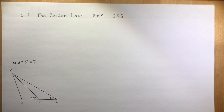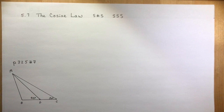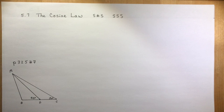5.7, the cosine law. Do you remember the cosine law from grade 10? That was the last one you learned because when you're trying to solve sides and angles in triangles, the first thing you always look for is whether or not you have a right angle triangle, in which case you're going to use SOHCAHTOA rules.